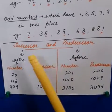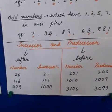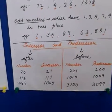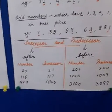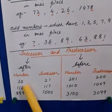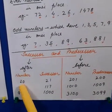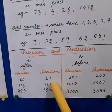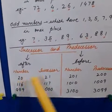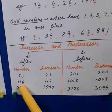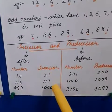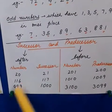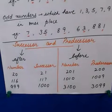Moving to the next part: successor and predecessor. Successor means after; predecessor means before. Let us see these examples. What will be the successor of 20? The immediately next number after 20 will be 21. So the successor of 20 is 21. Successor of 116 will be next number 117. Successor of 999 will be next number 1000. So, after means plus 1.